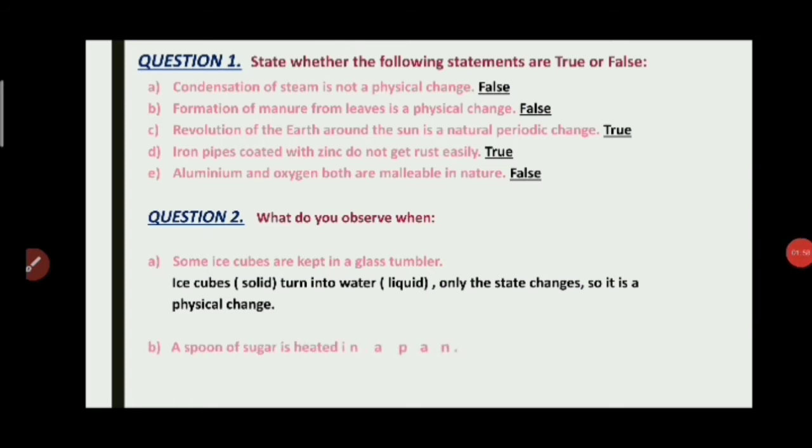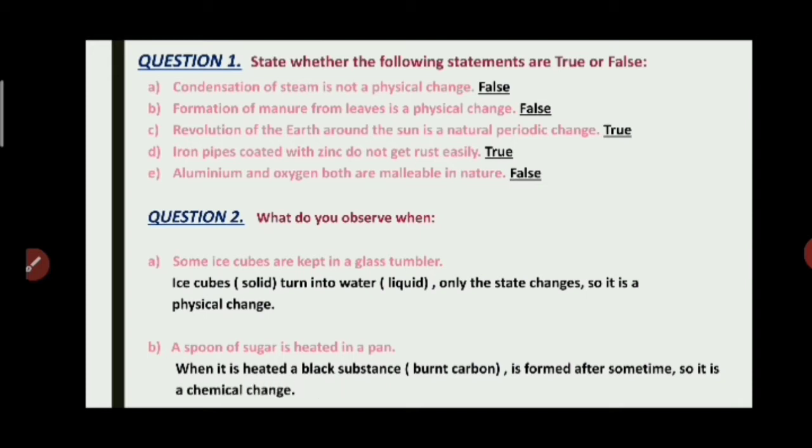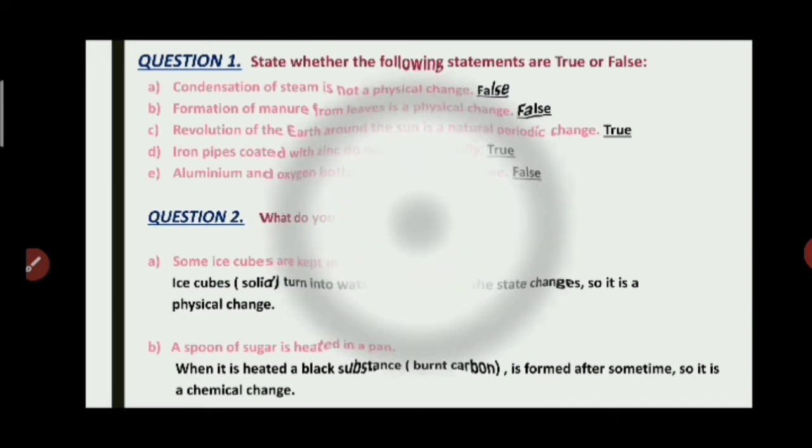Next, a spoon of sugar is heated in a pan. We observe that when it is heated, a black substance that is the burnt carbon is formed after some time. So it is a chemical change.